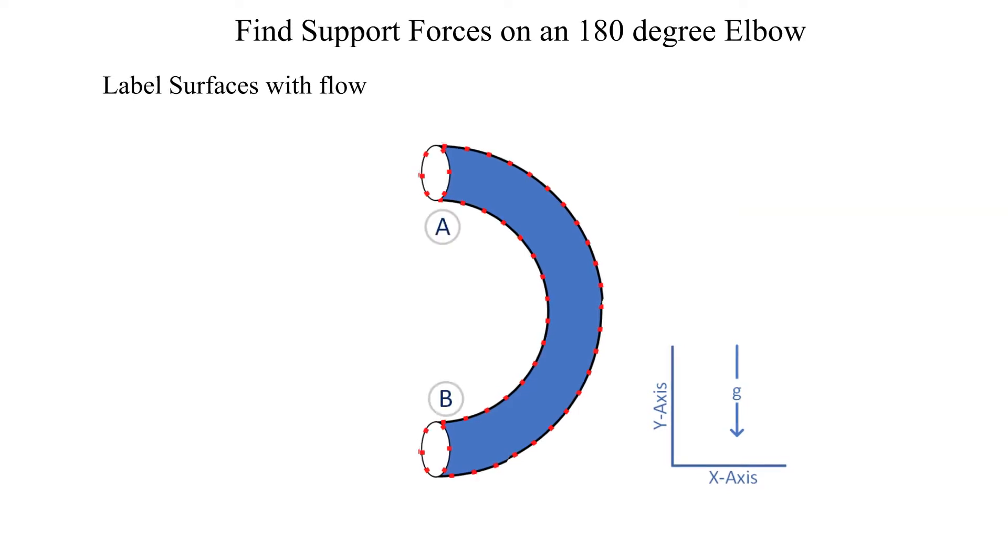Next we label our surfaces with flow. The surface with the inlet flow is labeled as A, the outlet flow surface as B.